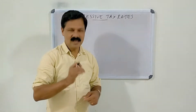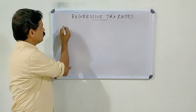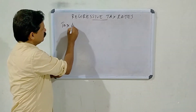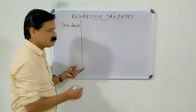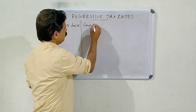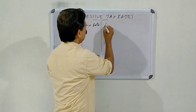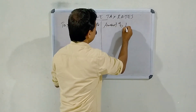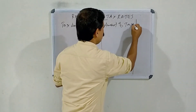First, see the schedule. The first column explains the tax base, that is income. The second column shows the tax rate. And the third column shows the amount of tax.